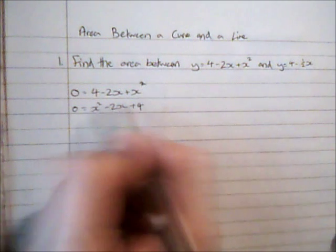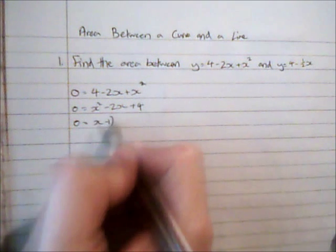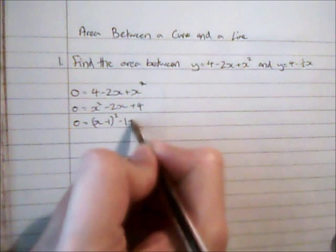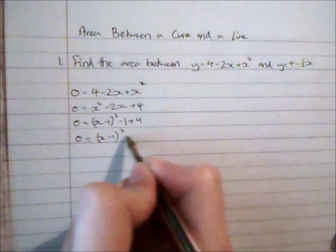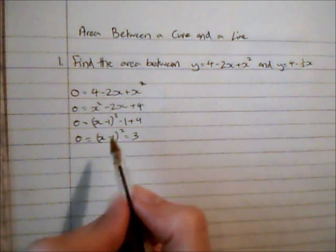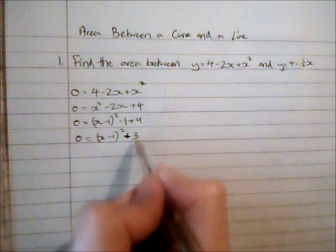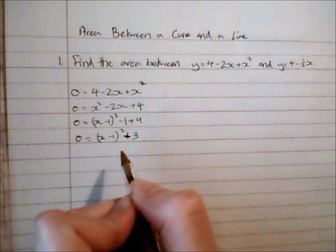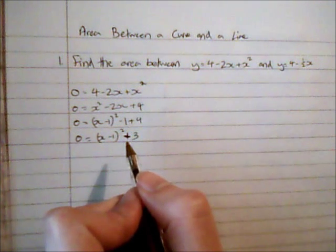Now this doesn't look like it's going to factorise to me so I'm going to complete the square. And I could try and solve this except for plus 3 so if I subtract 3 over here I then can't root it. So this tells me there are no solutions which indicates it doesn't intersect the x axis.